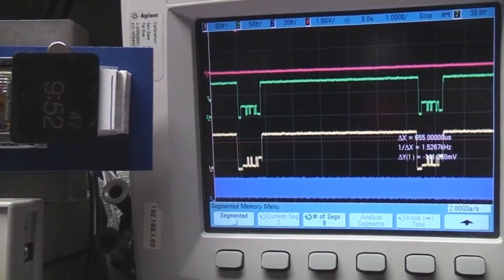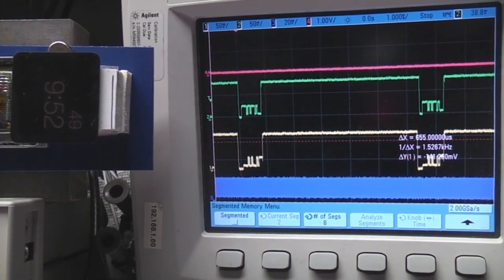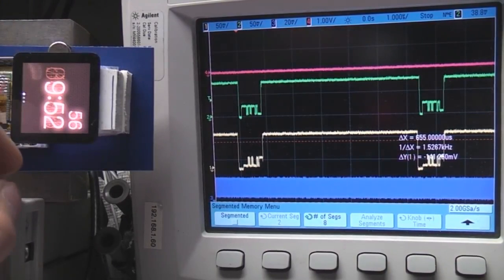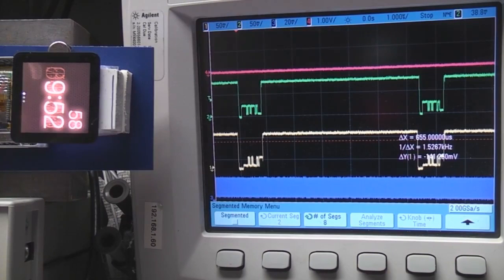And the other time segmented memory can be really handy is when you're doing things like analyzing streams of serial data - you've got various packets of serial data, you can just get it to trigger on each packet without wasting any of the memory between the packets. So that's another really handy thing. If you've got the serial decode option on the scope as well, you can capture a lot of detail out of a lot of packets without wasting memory from all the gaps in between them.